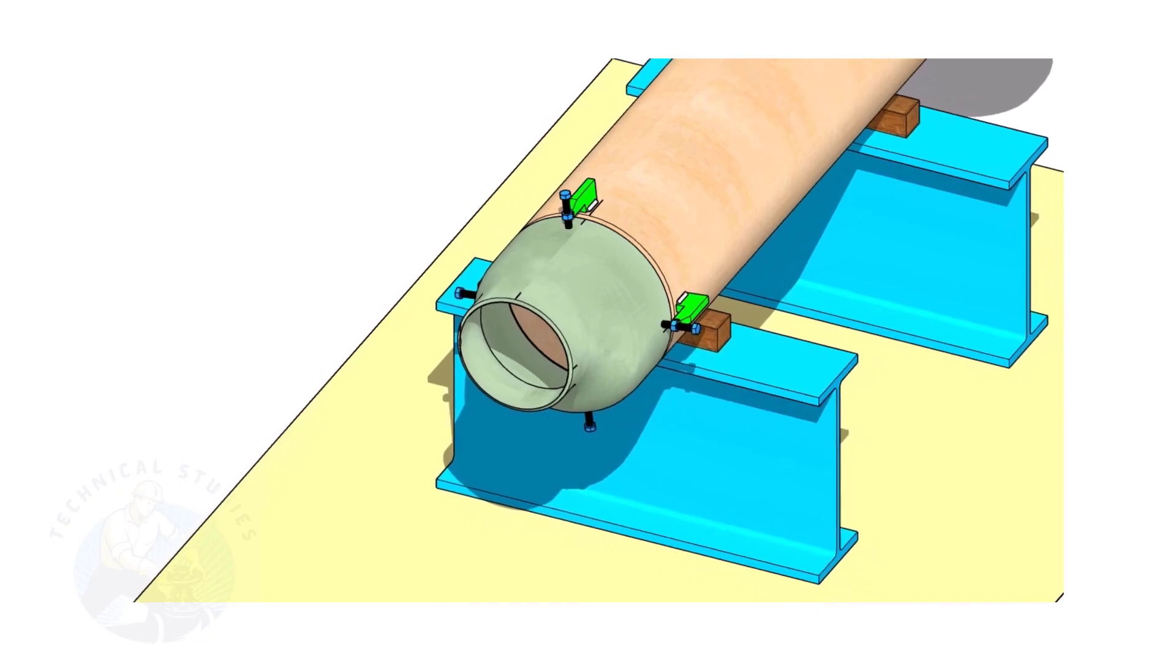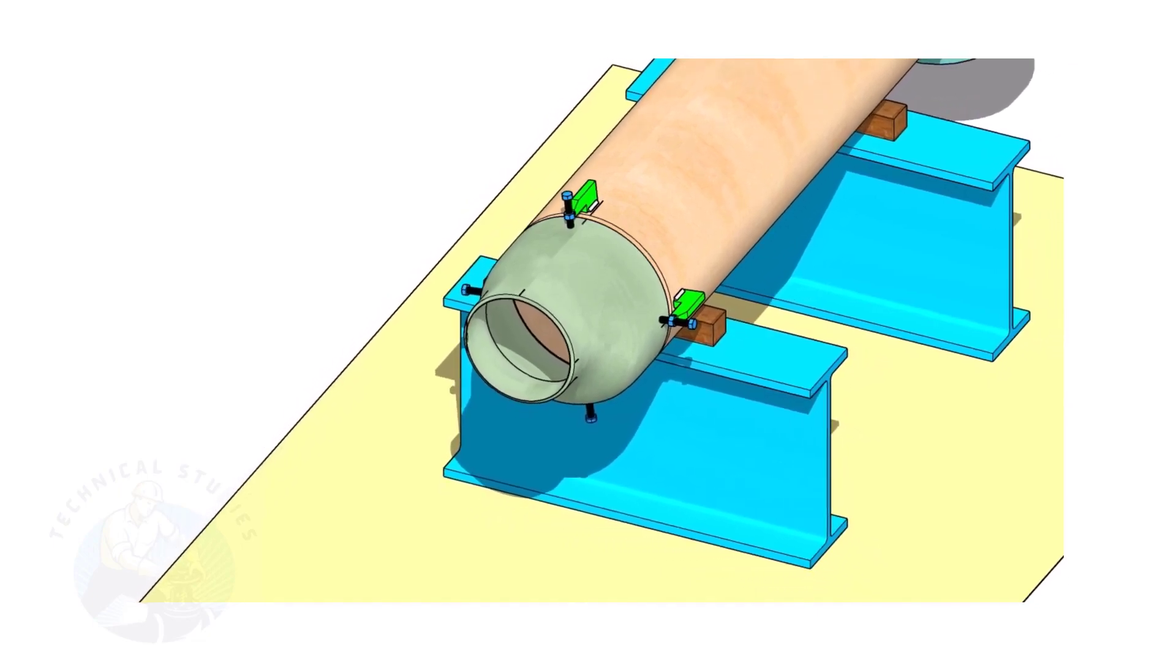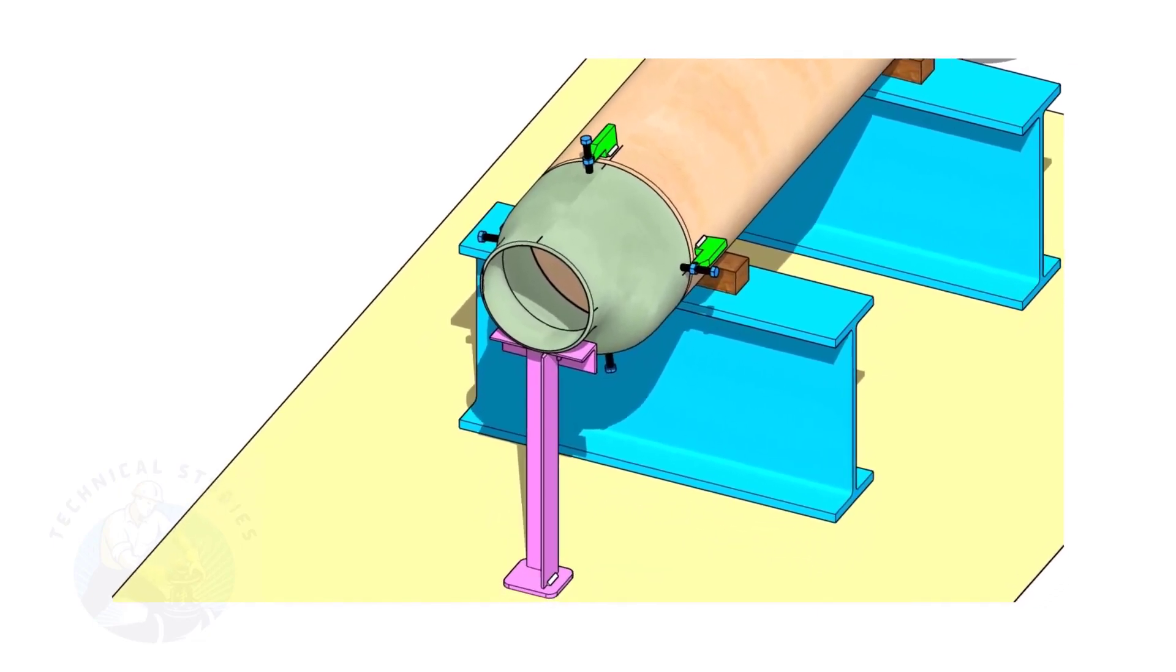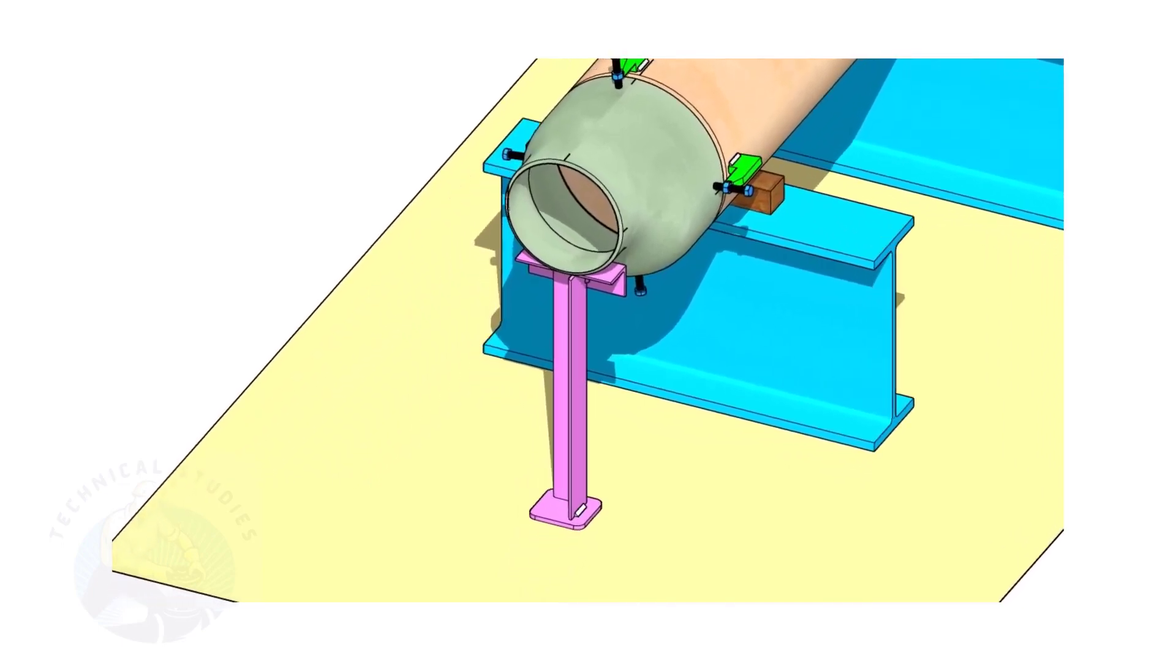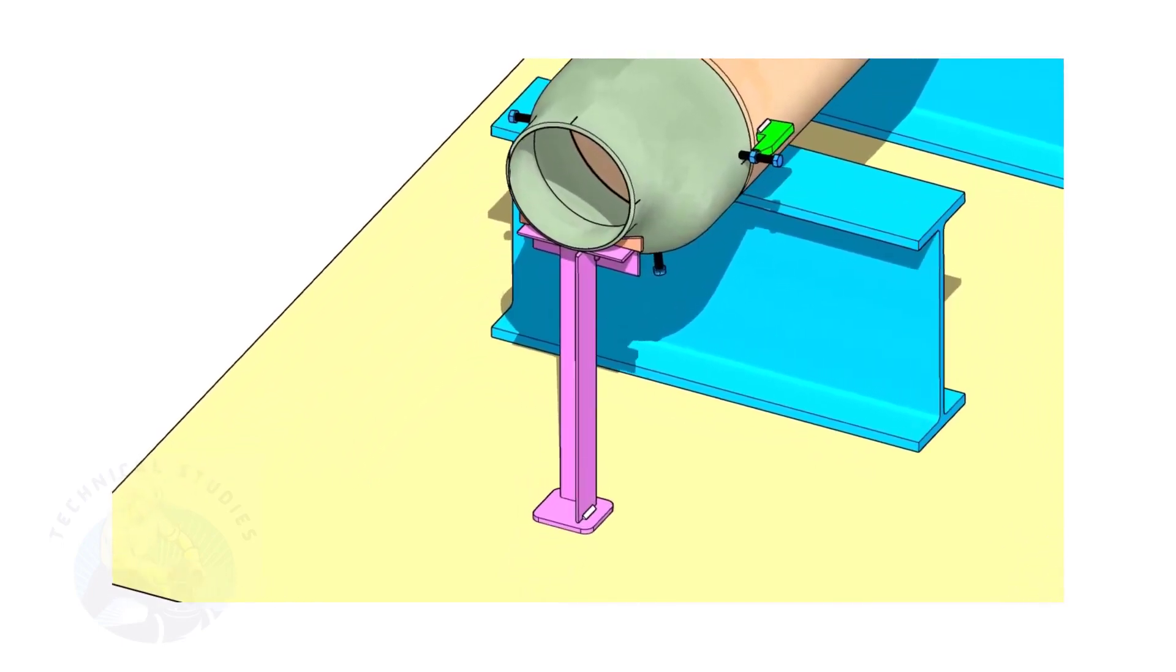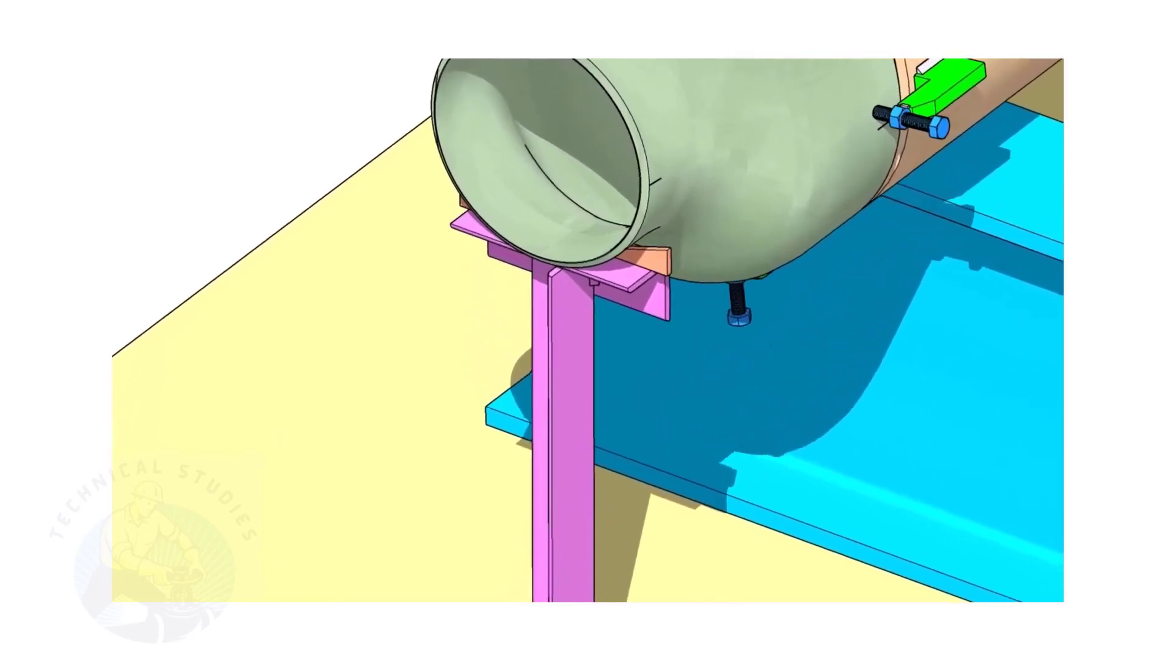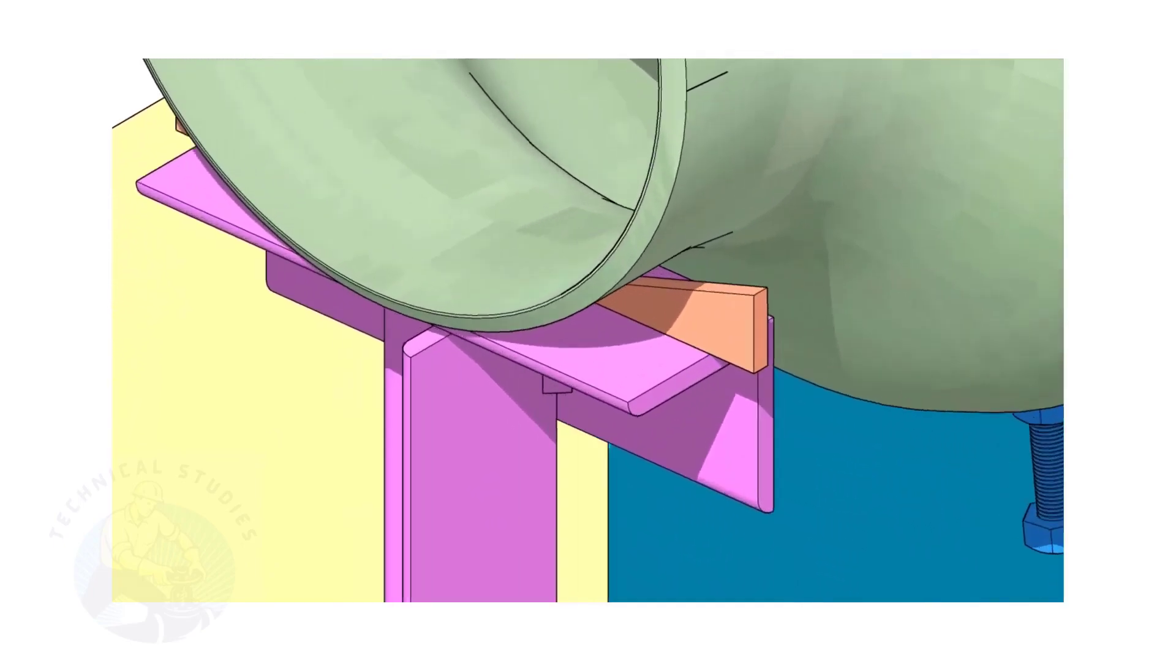Put the reducer in the clamps. Slightly tighten the bolts. Arrange proper supports below the reducer. The height of the support shall be adjustable. Here, I used simple wedges.